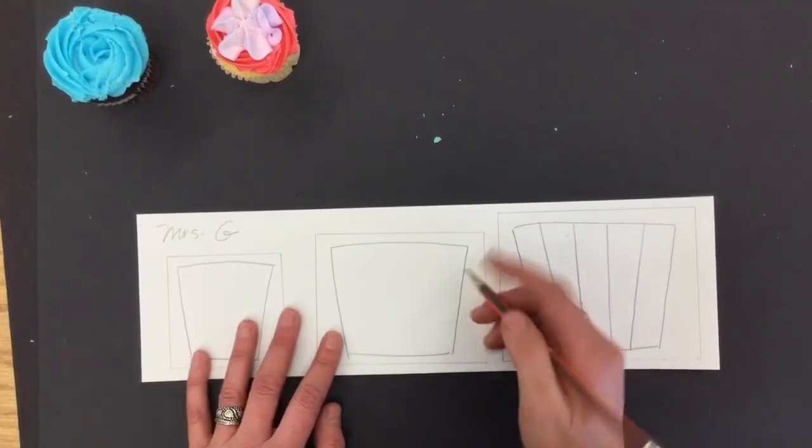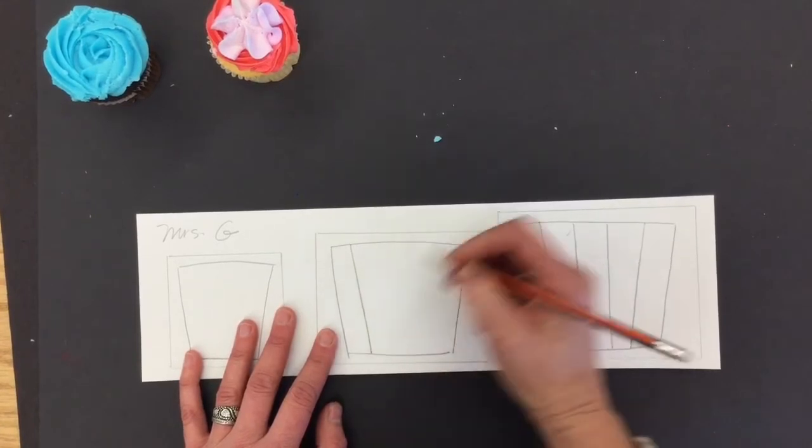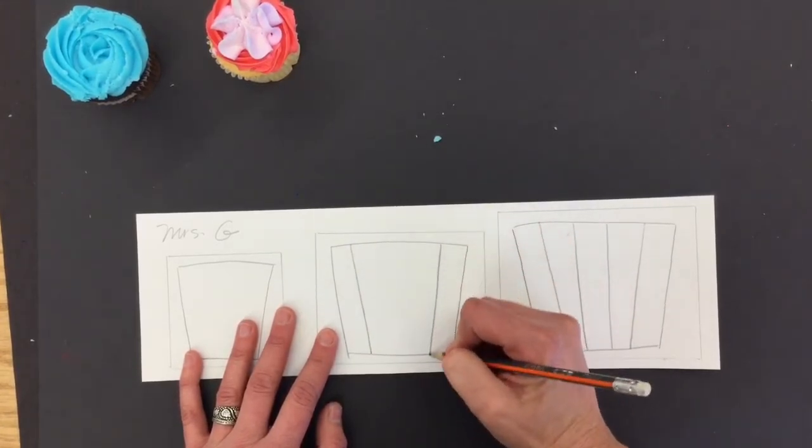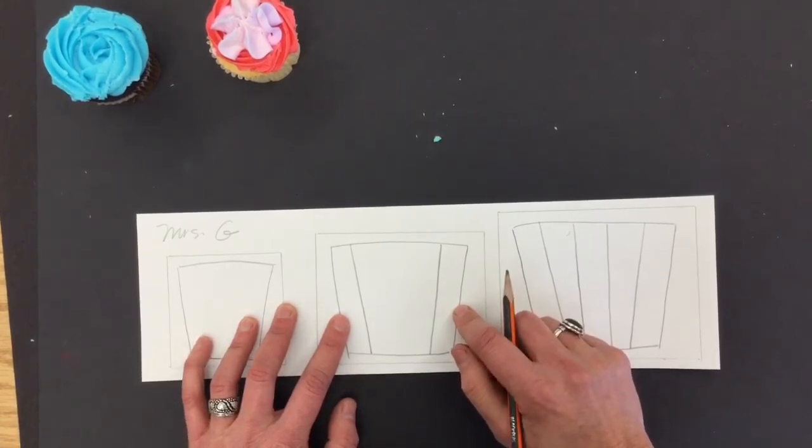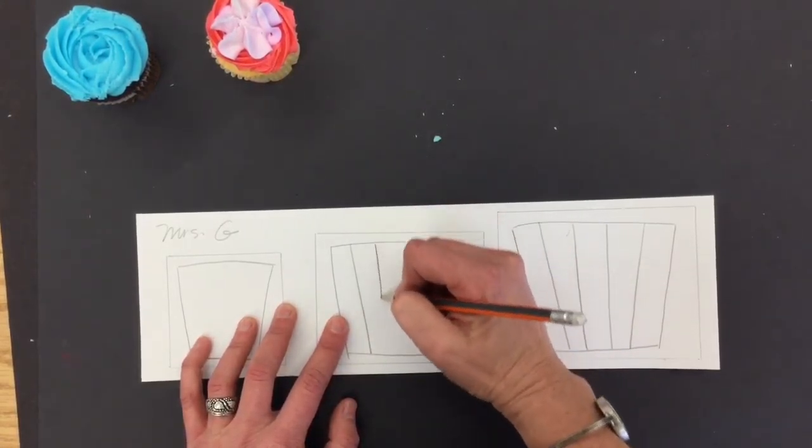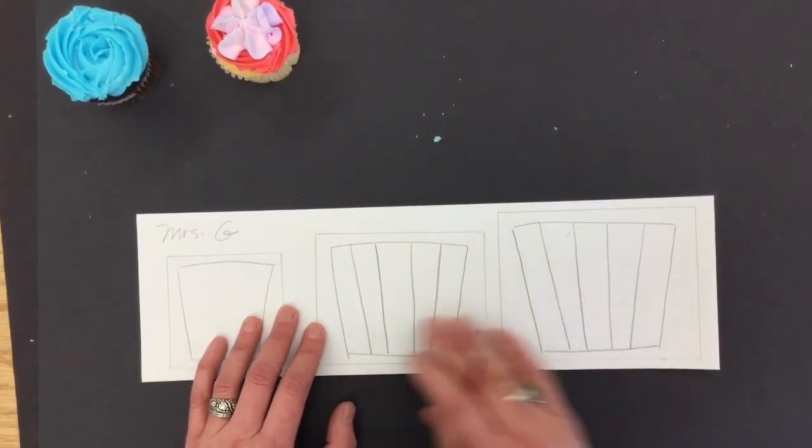Now we'll do the same thing over here. Outsides first. One, two. They slant just like the outer edge and now two more in the middle straight. Number three and number four. Perfect.